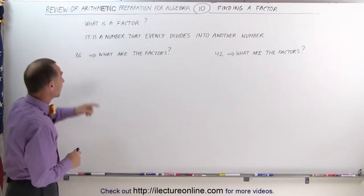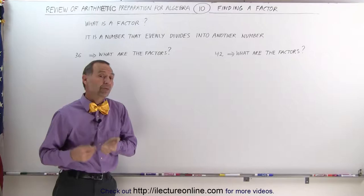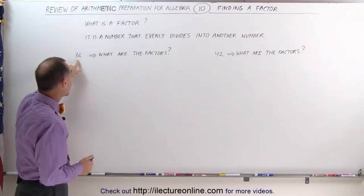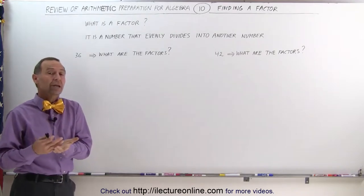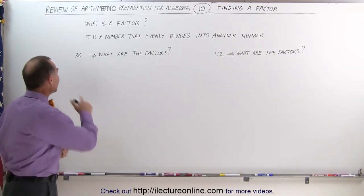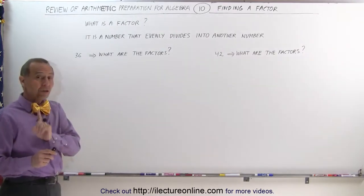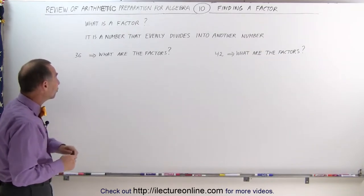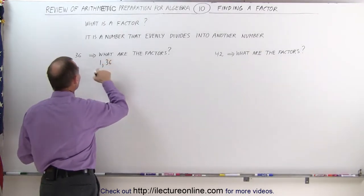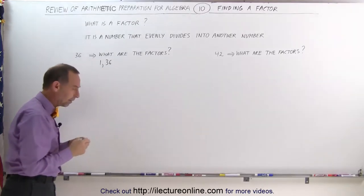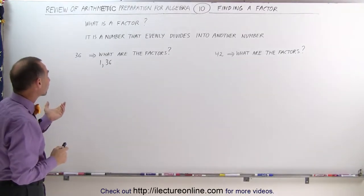The explanation here is that it is a number that evenly divides into another number. For example, if we take the number 36, what are the factors of the number 36? What numbers are there that evenly divide into 36? And it does include the number 1 and itself. In other words, 1 and 36 are factors of 36. But what other numbers fit evenly into 36?